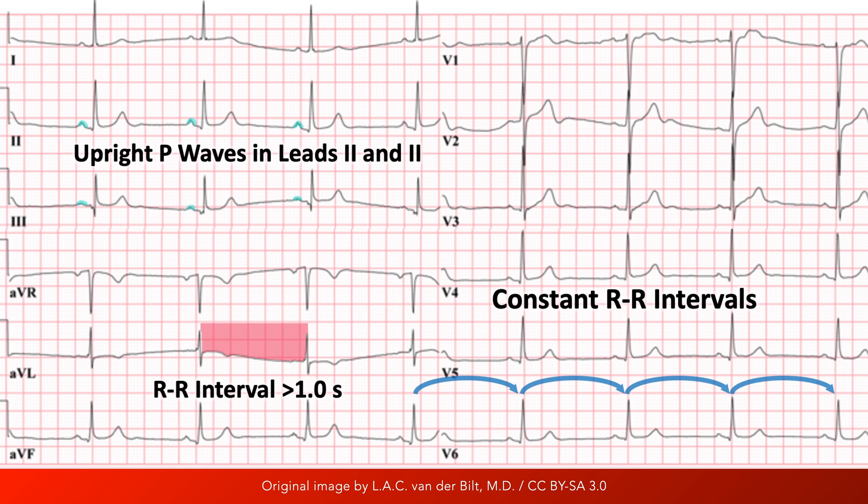To quickly recap: with sinus bradycardia, an upright P wave of constant morphology precedes every QRS complex, with a regular heart rate slower than 60 beats per minute.